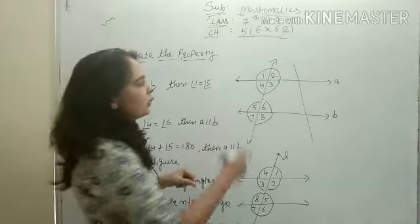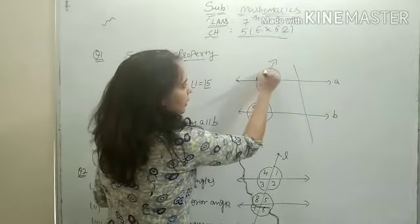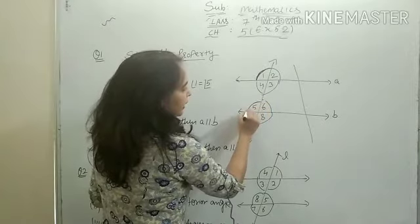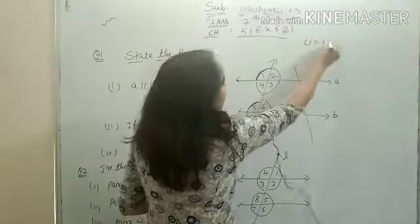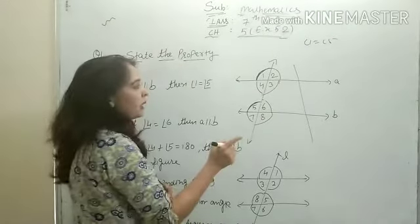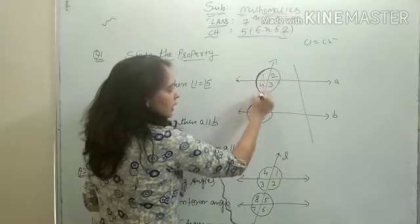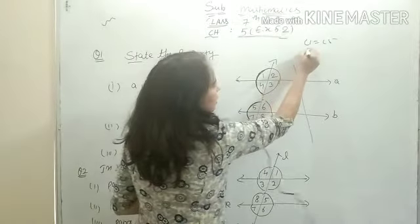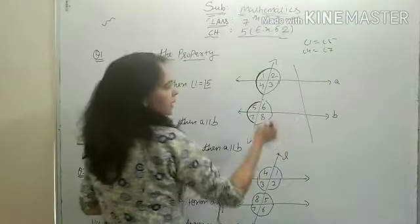If we talk about corresponding angles — angle 1 is equal to angle 5. The second angle 4 is equal to angle 7. Similarly, on the left side, angle 2 is equal to angle 6.